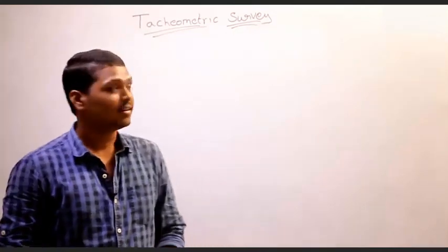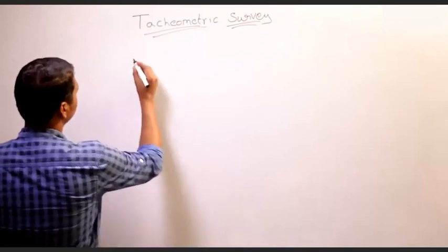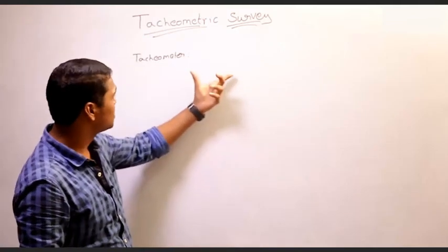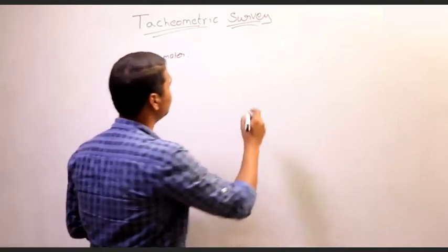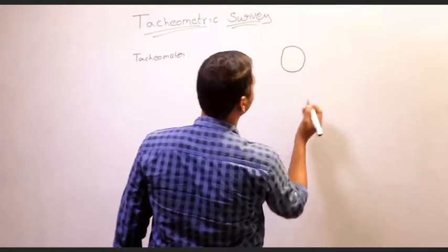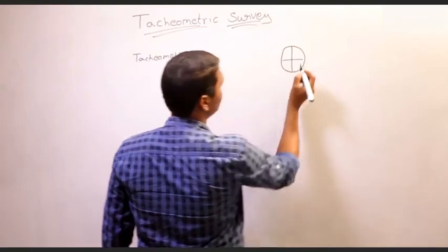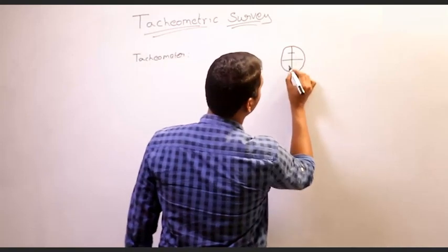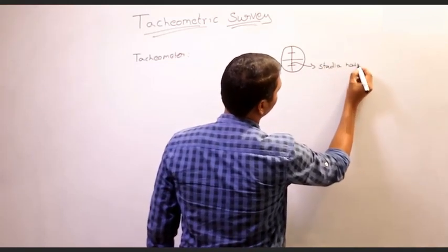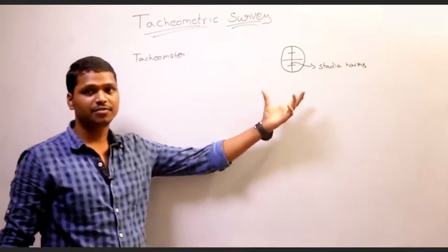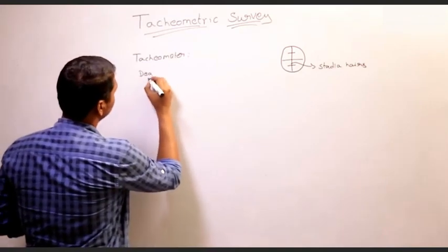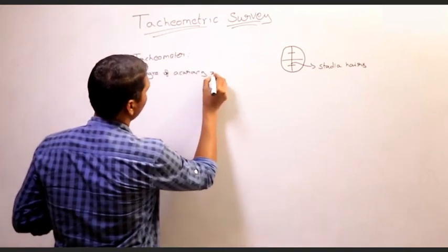Let us go to the tachymetric survey. In the tachymetric survey we use an instrument called a tachymeter. A tachymeter is a theodolite fitted with a special diaphragm which has top and bottom crosshairs in addition to the central crosshair. These are also called stadia hairs. It is an instrument with which we can measure vertical and horizontal distances very accurately, with a degree of accuracy of 1 by 1000.